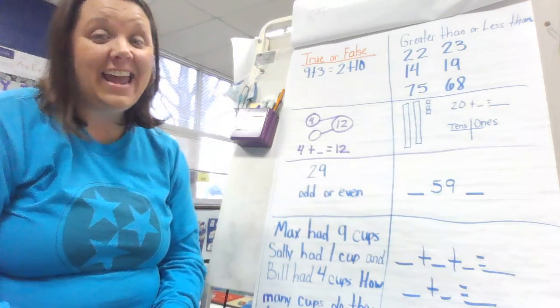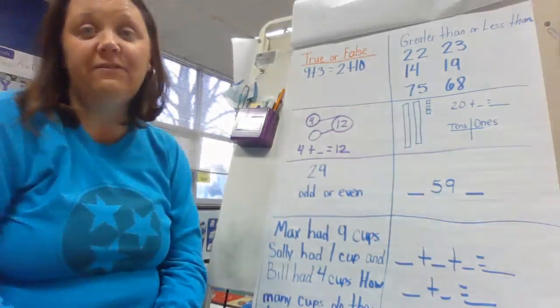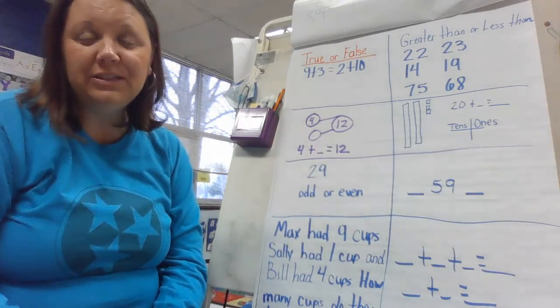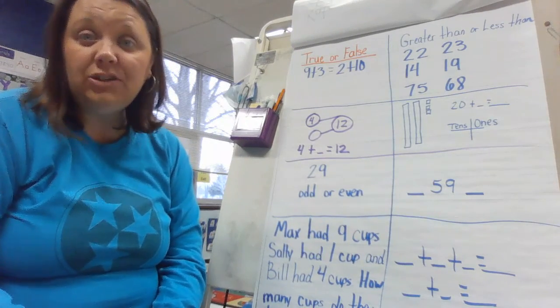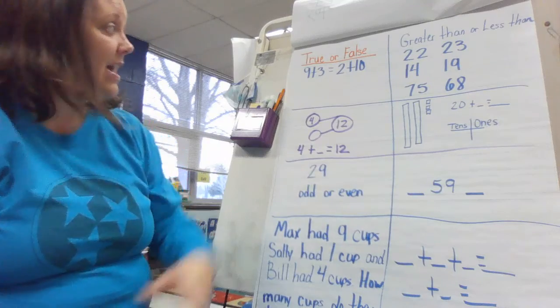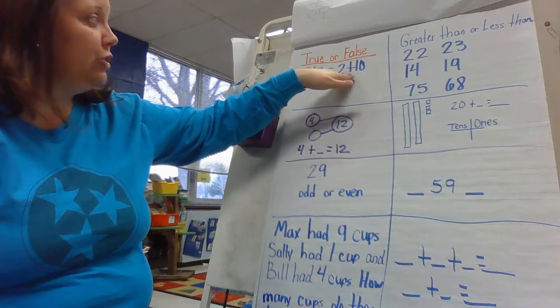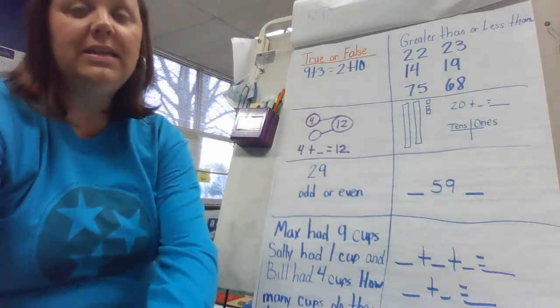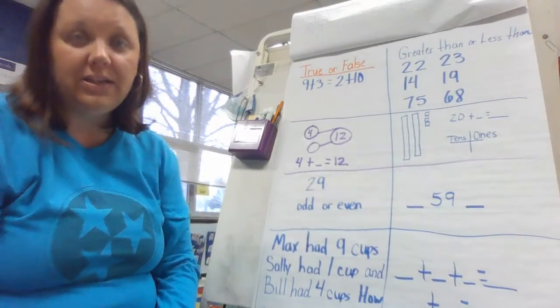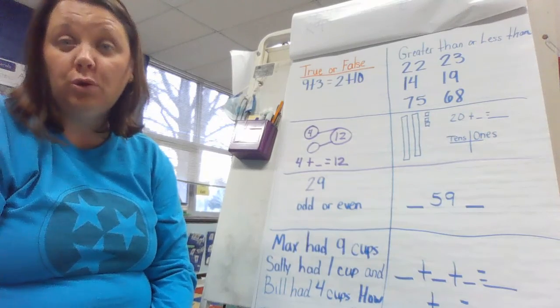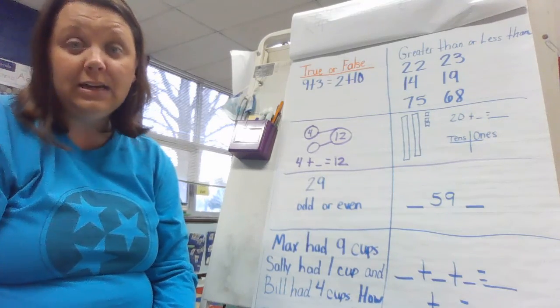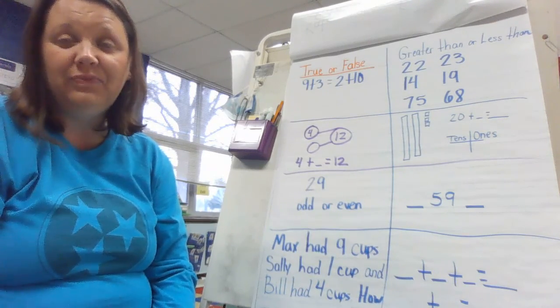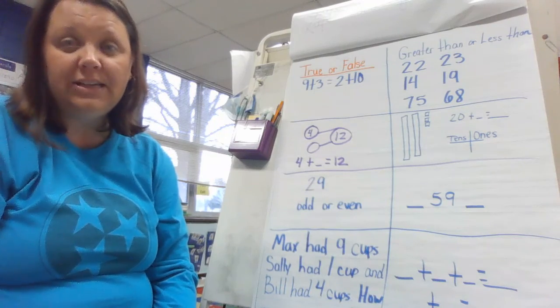Today we are going to start with true and false. And so if you have your pencil and paper ready, what I need you to do is I need you to write 9 plus 3 equals 2 plus 10 on your paper. And we are going to determine if that equation is true or false. True meaning equal, false meaning not equal.